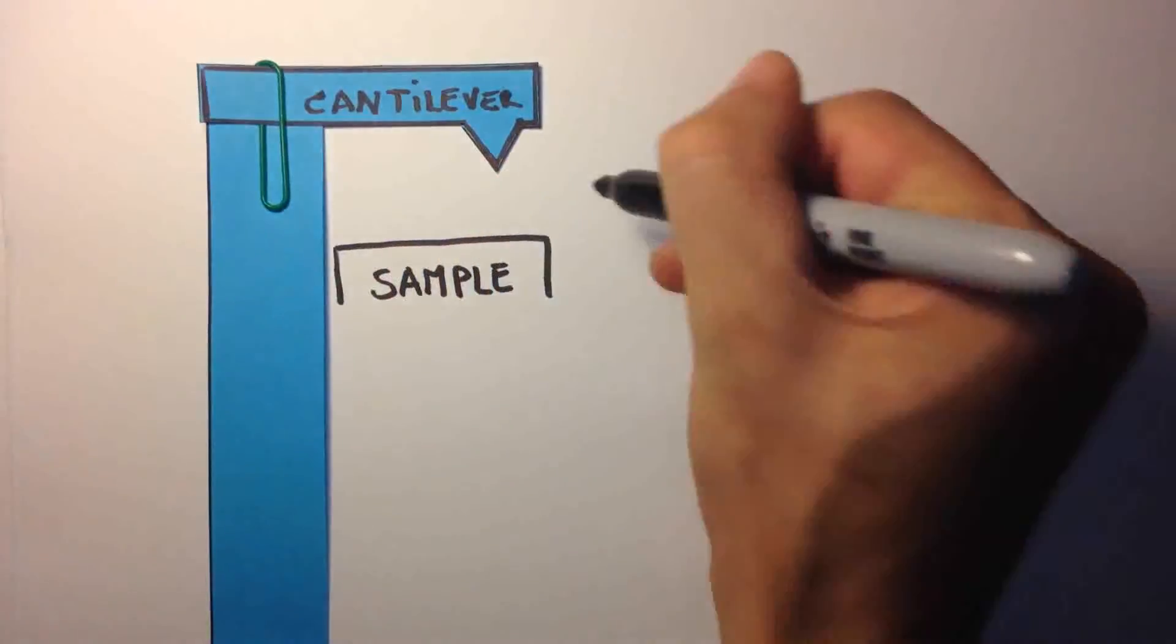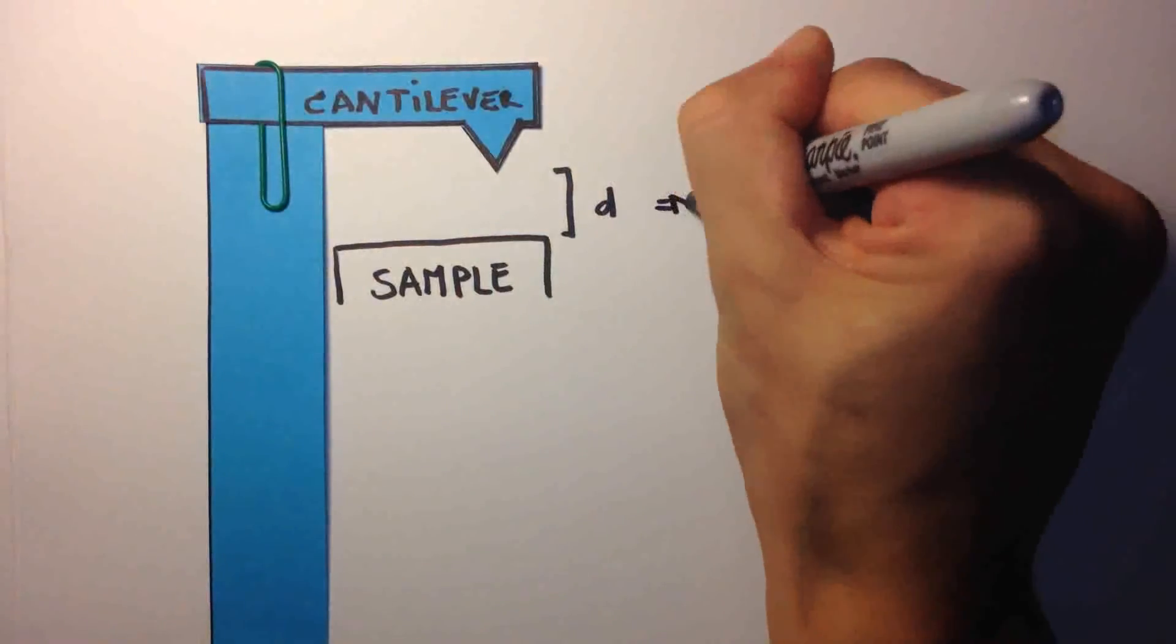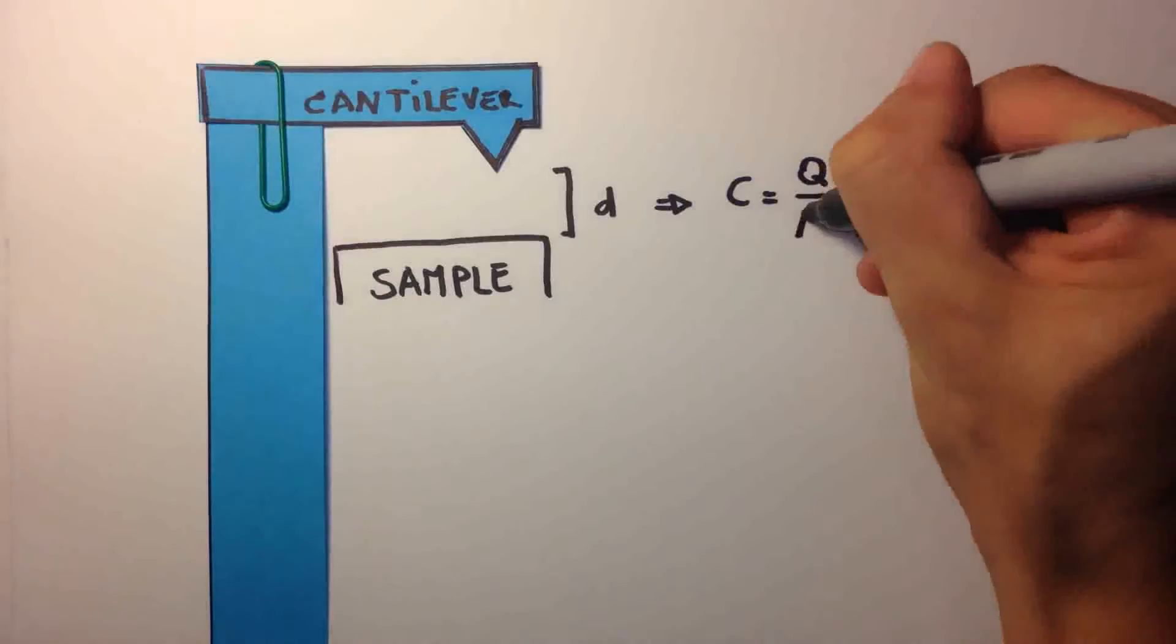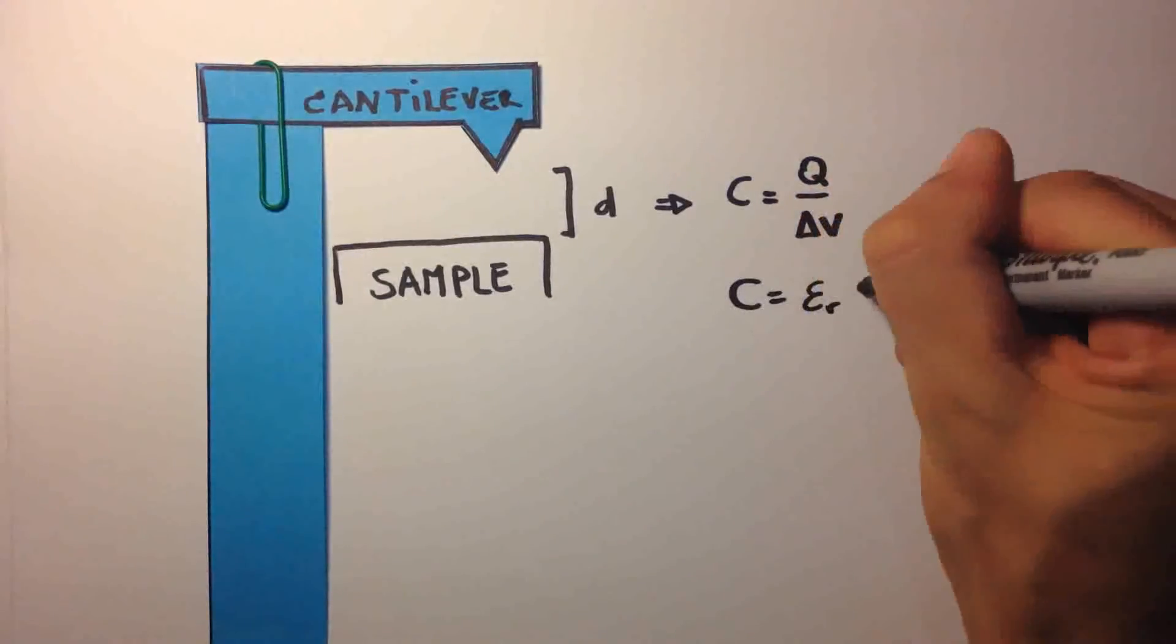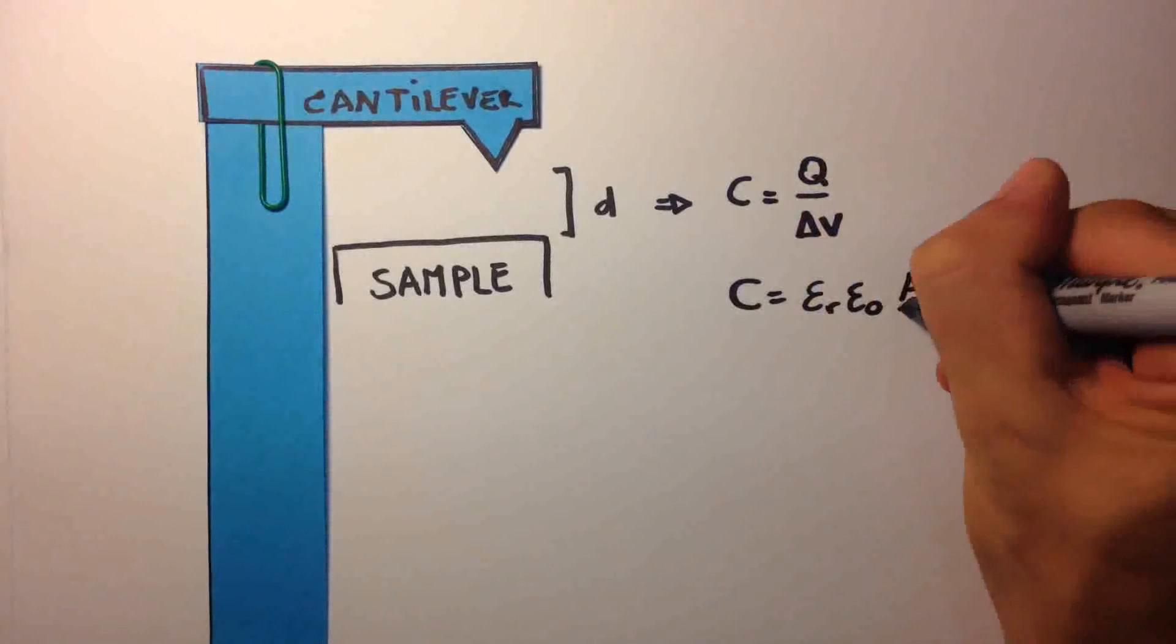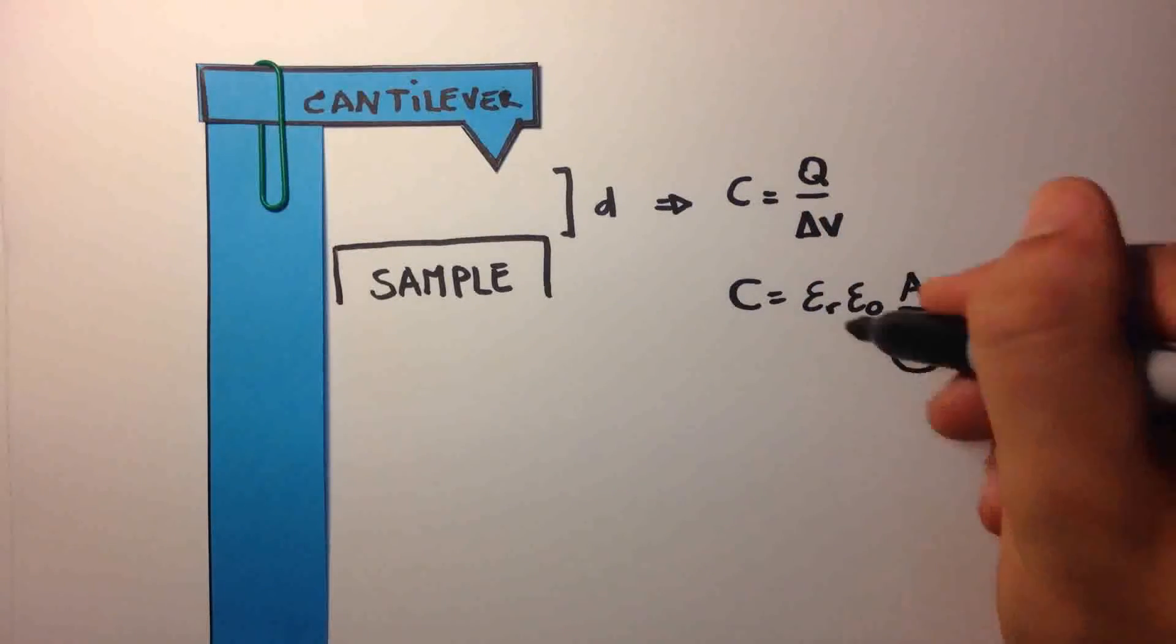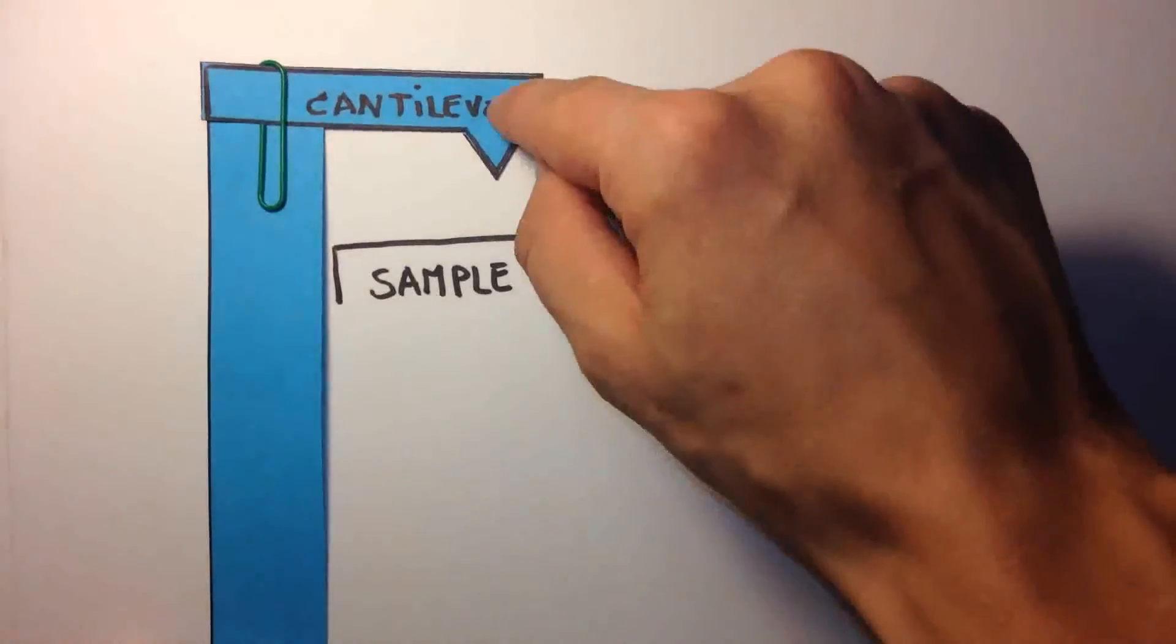When the cantilever and the sample are not in contact, the system acts like a capacitor. The capacitance is equal to the ratio between the amount of charges and a potential difference. In addition, it is also inversely proportional to the distance between the tip and the sample. Therefore, changing this distance will in turn change the value of the capacitance. And this is precisely what happens in a Kelvin probe microscope.